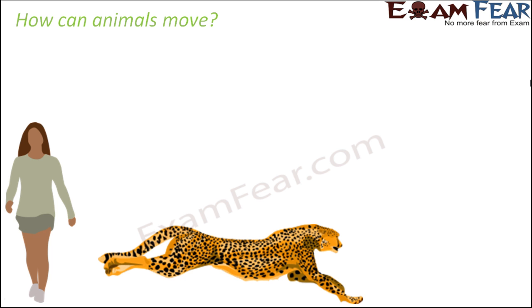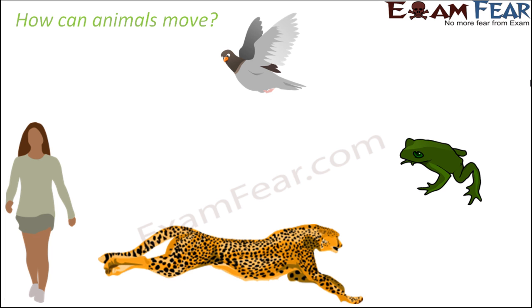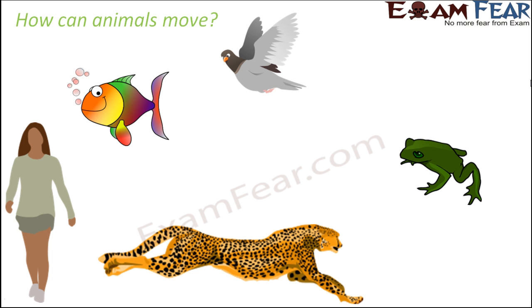Think of a frog — how does it move from one place to another? It tends to jump, and for jumping, its legs and hands, that is its limbs, help. A bird flies with the help of its wings. Fish live in water, so they swim, and in swimming their fins, tail, and all these parts together help in the process of swimming.